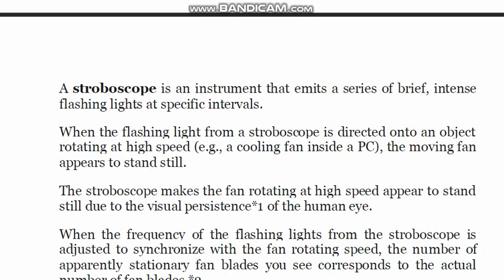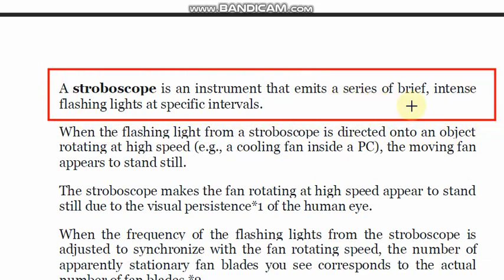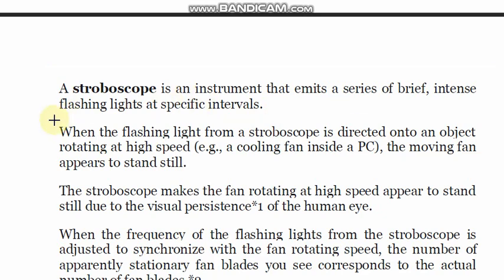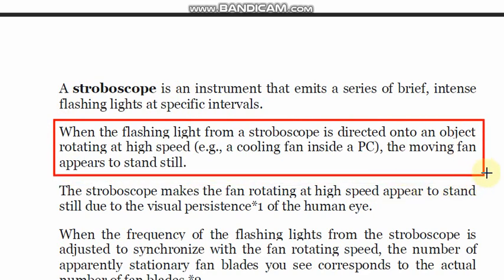What is a stroboscope? A stroboscope is an instrument that emits a series of brief, intense flashing lights at specific intervals — meaning there is a frequency of light generation. When these flashing lights from the stroboscope are directed onto an object rotating at high speed, such as a cooling fan inside a PC or a ceiling fan at home, the stroboscope makes the fan appear to stand still due to the visual persistence of the human eye.